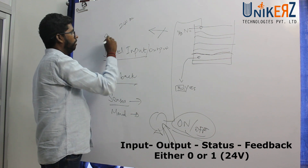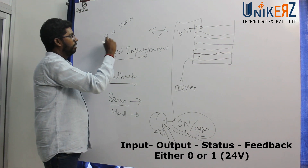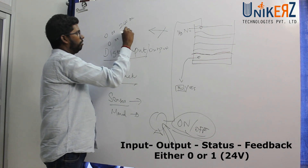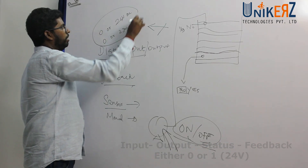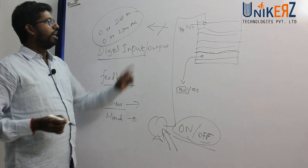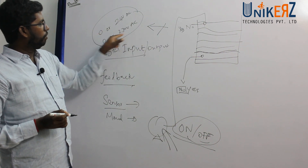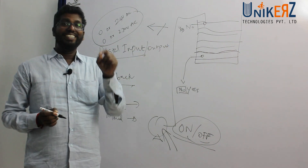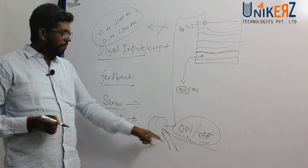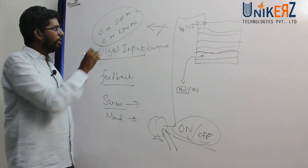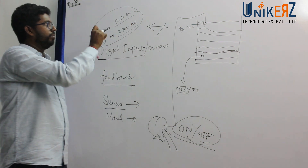That is zero or 24V DC, or zero or 230V AC — this is what discrete means. The feedback is that voltage is either coming or not. That is the digital input. And that is the digital output — the on command for the pump is 24V DC or 230V AC.